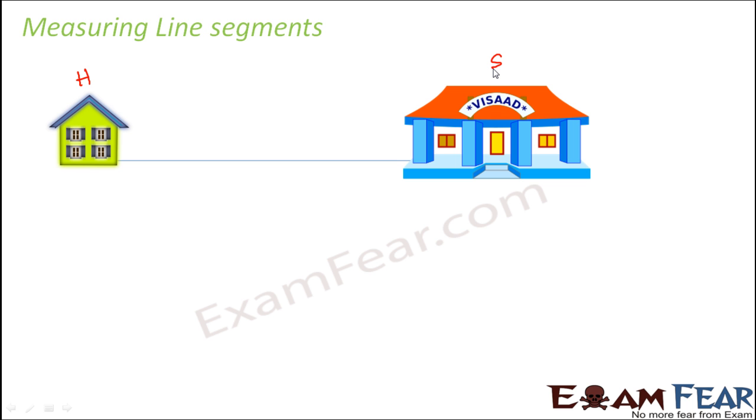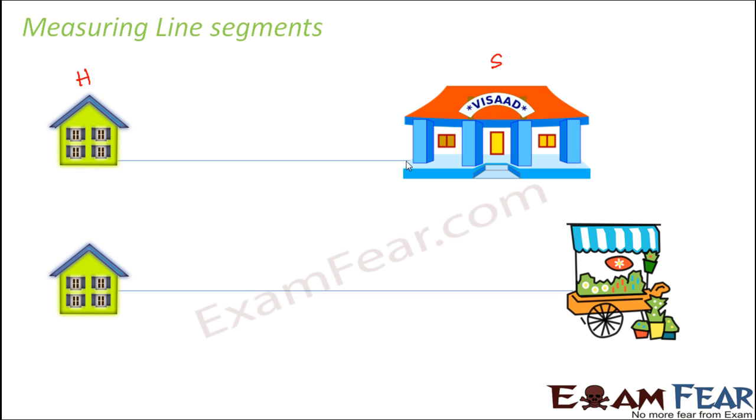And there is a straight road that connects your school to your home. Now if I want to find out the distance between your school and your home, what do I need to do? I need to find out the length of this line segment because it is a straight line segment. So if I am able to find out its length, I should be able to find out the distance between your home and your school.